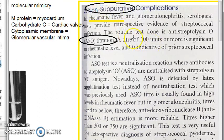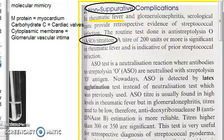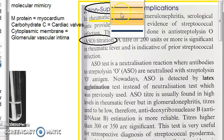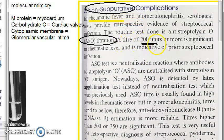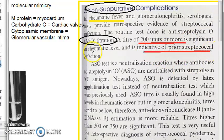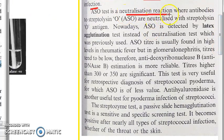ASO titer means anti-streptolysin O. If there is a titer of 200 units or more, it is indicative of rheumatic fever. It also indicates a prior streptococcus infection. The ASO titer is a neutralization reaction where antibodies to streptolysin O are neutralized with the streptolysin O antigen.